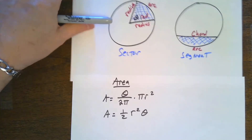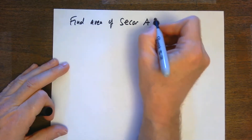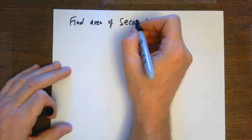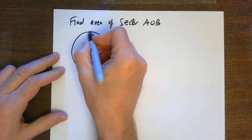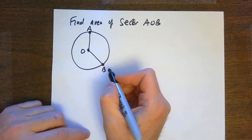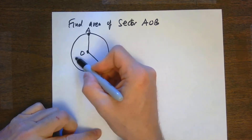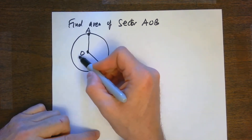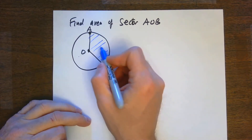Let's do a couple of examples — one very basic and simple, and then one a lot more difficult. First, let's find the area of sector AOB. When I look at this, I might ask myself: which sector am I talking about? This is the minor sector; that would be the major sector. Unless otherwise told to find the major one, it's always going to be the minor one.